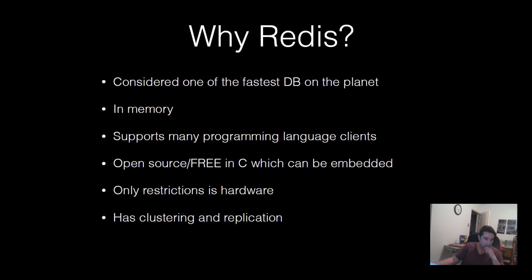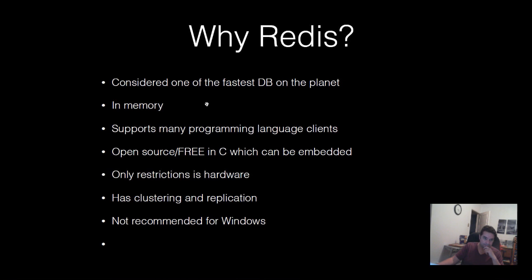Redis has clustering and replication features. When you cluster a Redis instance, you can set up different instances that all talk to each other over a network, limited only by your hardware. If one instance dies and you're using master-slave configuration, a slave can kick in on the fly to become the new master — which is very powerful. The one big restriction is that Redis is not recommended for Windows, and I'm pretty much moving off Windows due to latency and security concerns with Windows 10.